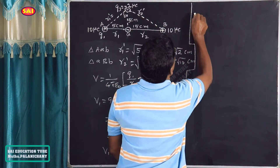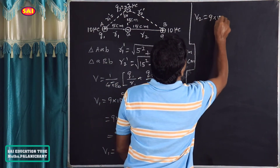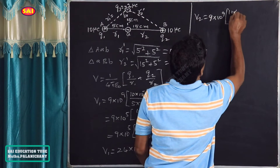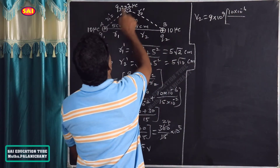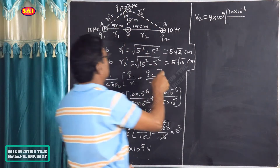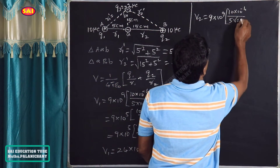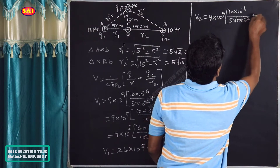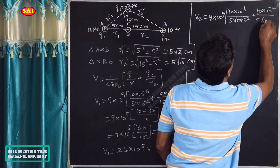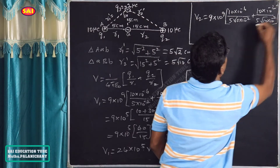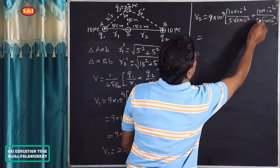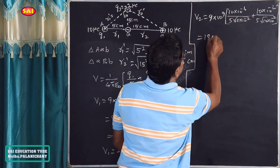V2 is now calculated. V2 = 9×10⁹ × [Q1/R1' + Q2/R2'], where Q1 = 10×10⁻⁶ C and R1' = 5√2 × 10⁻² m, and Q2 = 10×10⁻⁶ C and R2' = 5√10 × 10⁻² m. Simplifying, this gives 18 × 10⁵ × (1/√2 + 1/√10).